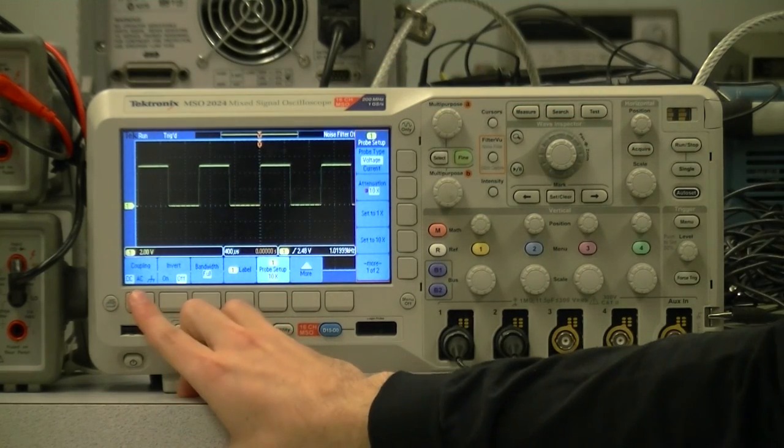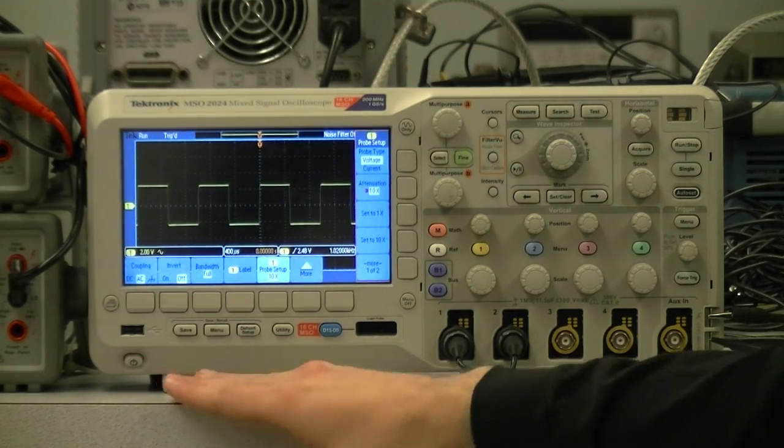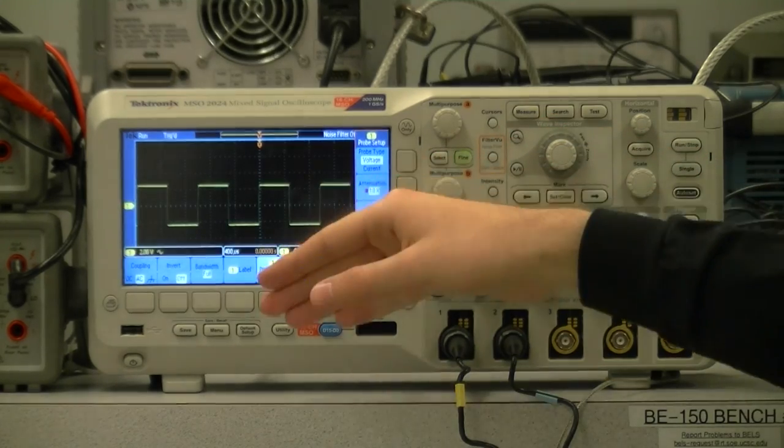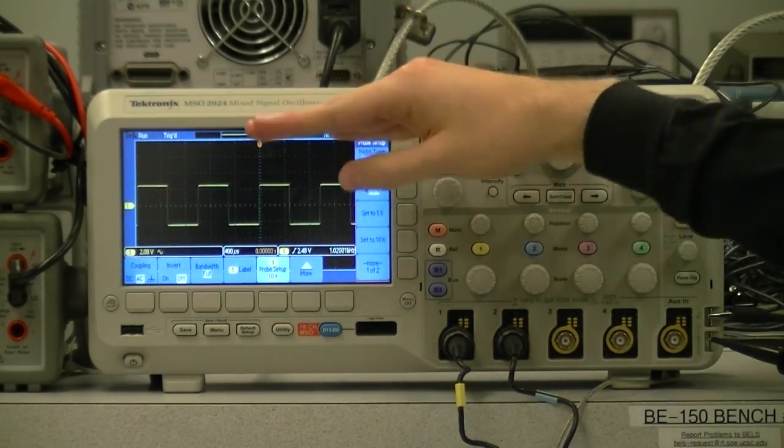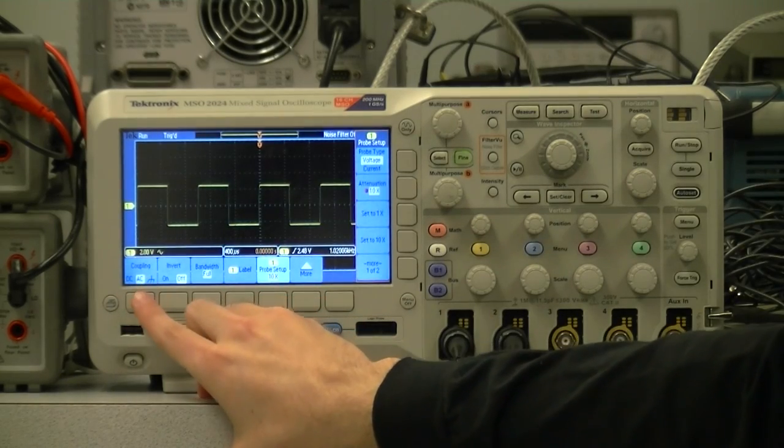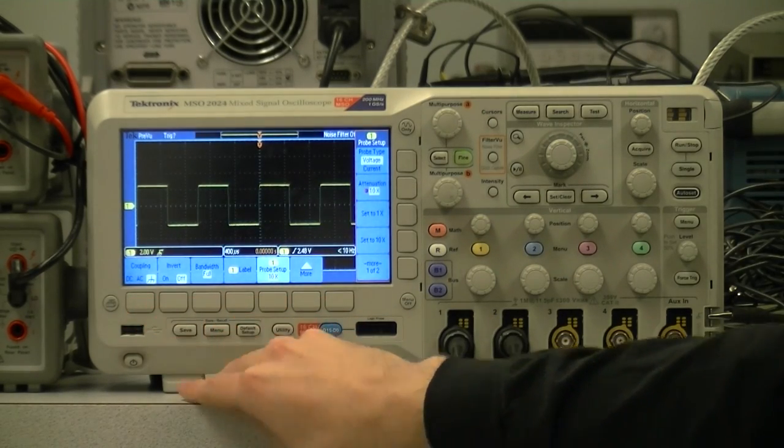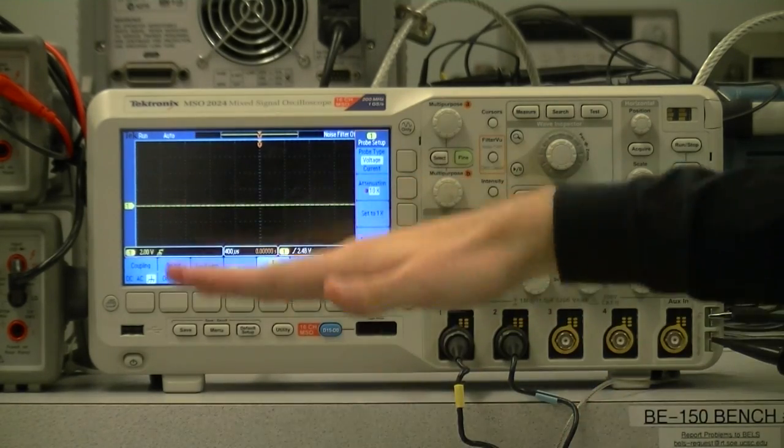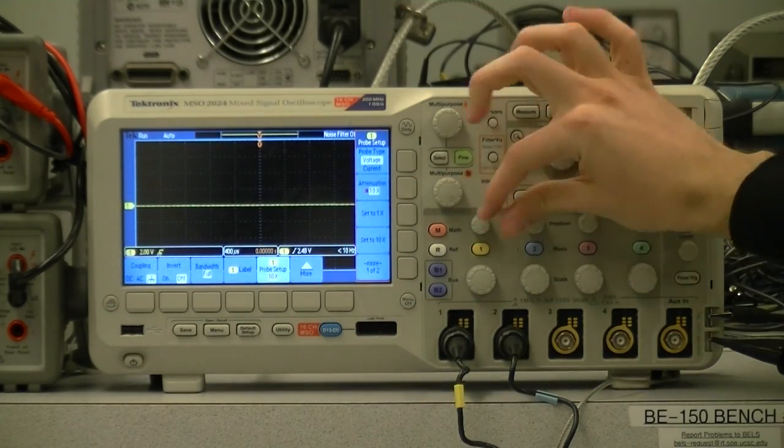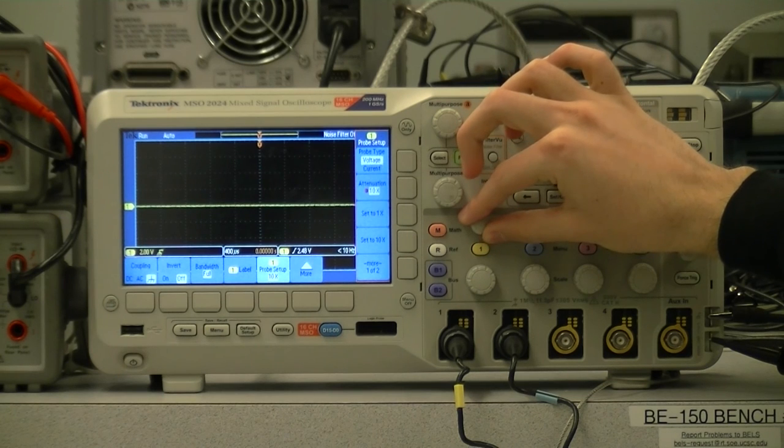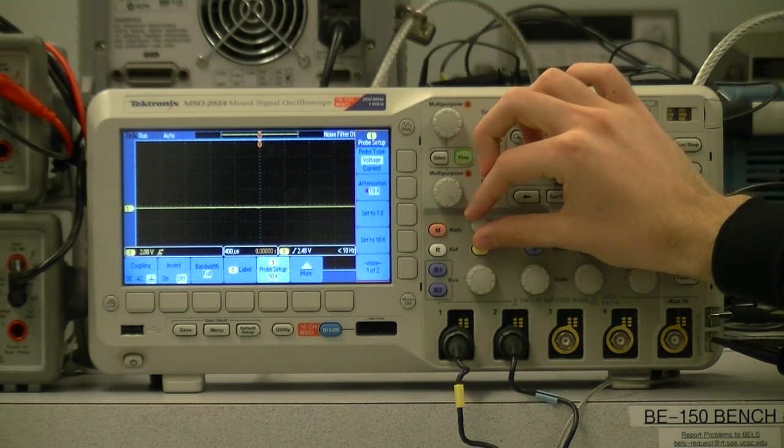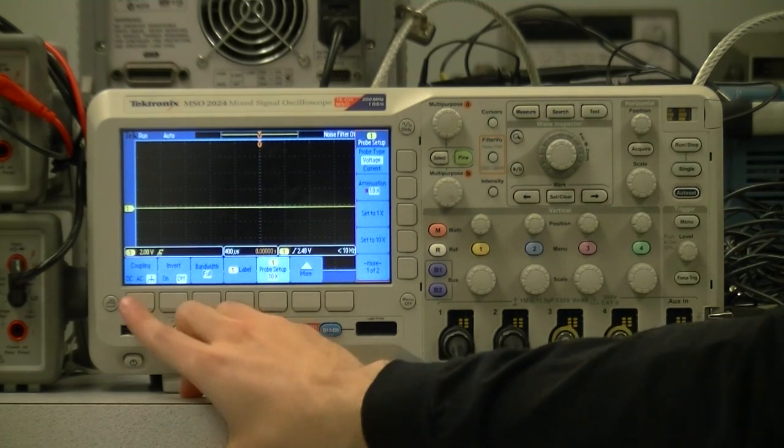If we change to AC coupling by pressing this button, it now throws away the DC component of the signal, and the signal goes equally on either side of the ground. The last coupling option is ground, which will just show us that reference line. We can adjust where ground is on the screen by rotating this upper knob. We can lower it and raise it back up.